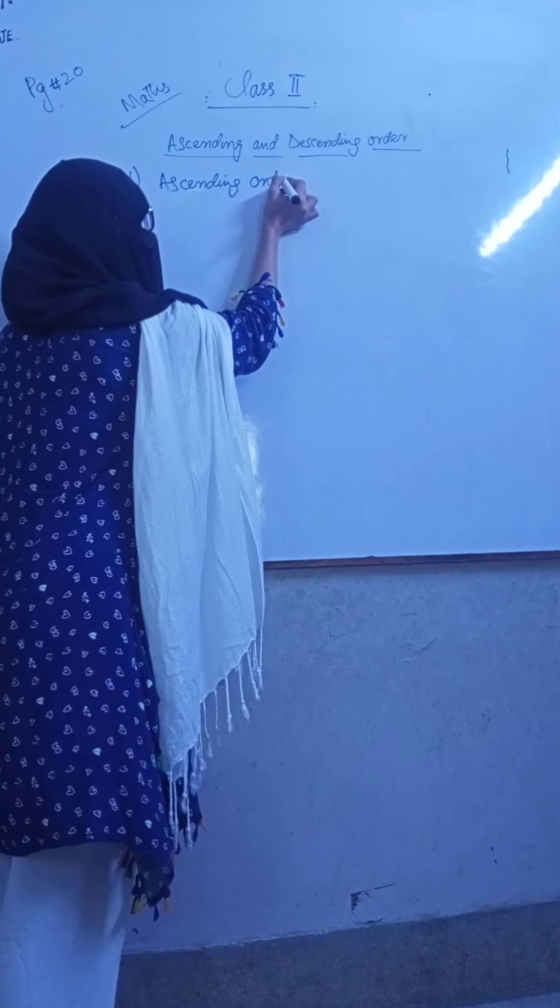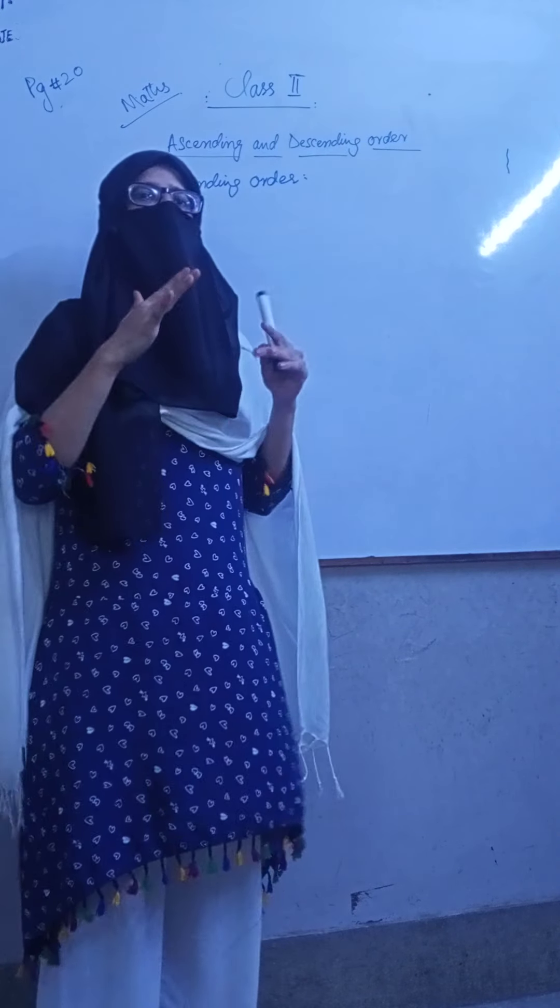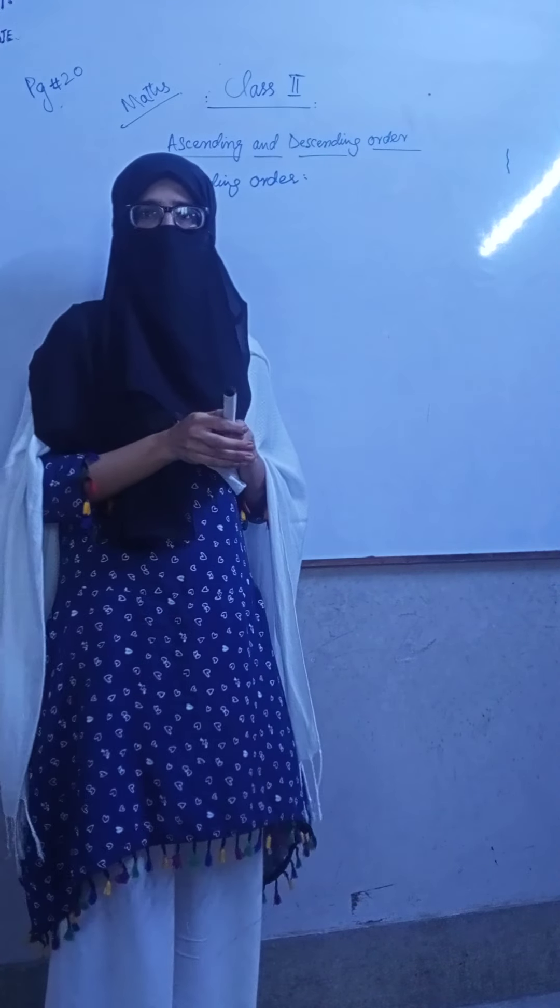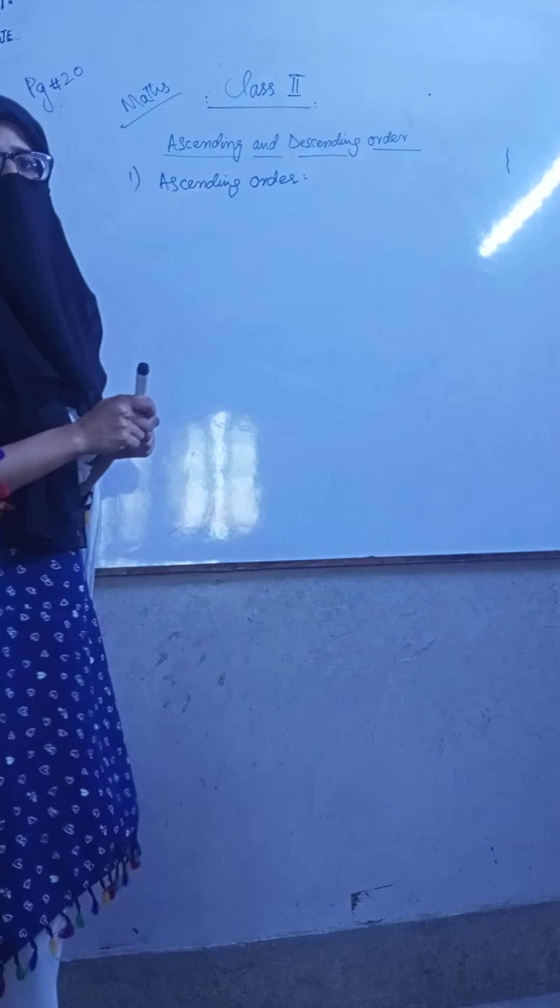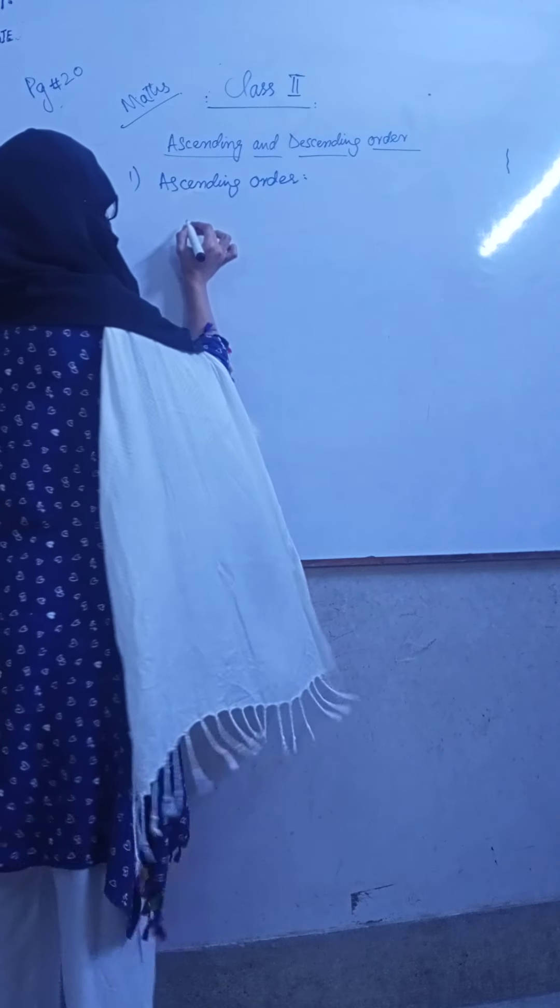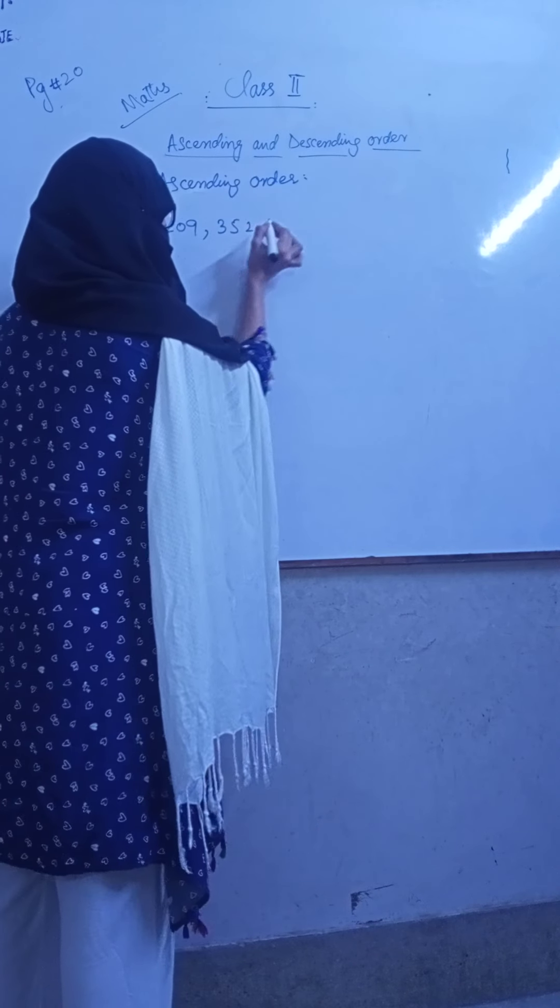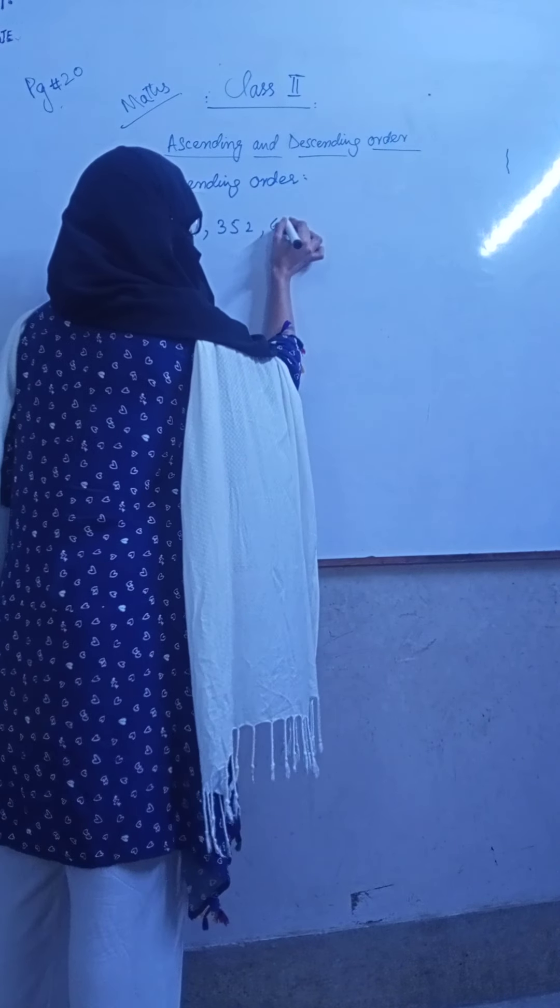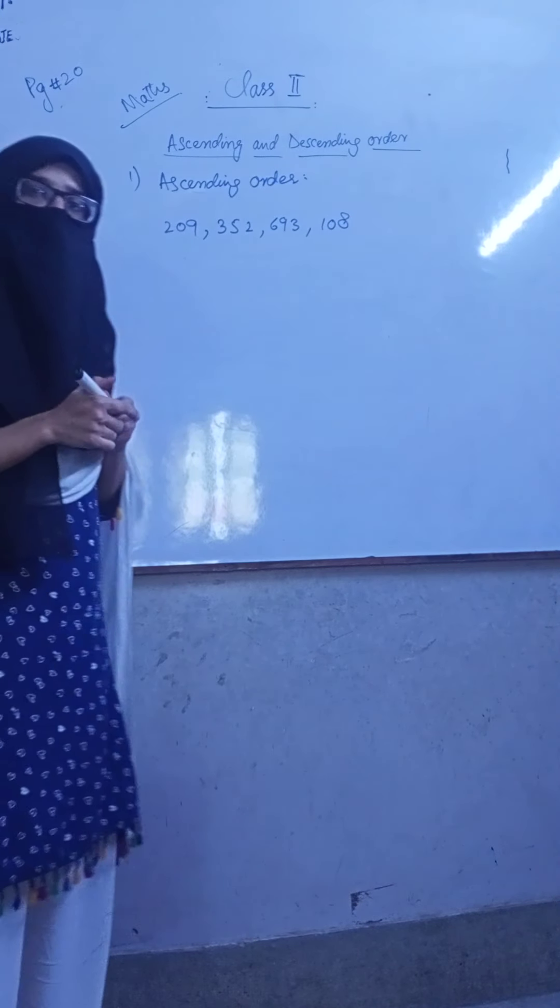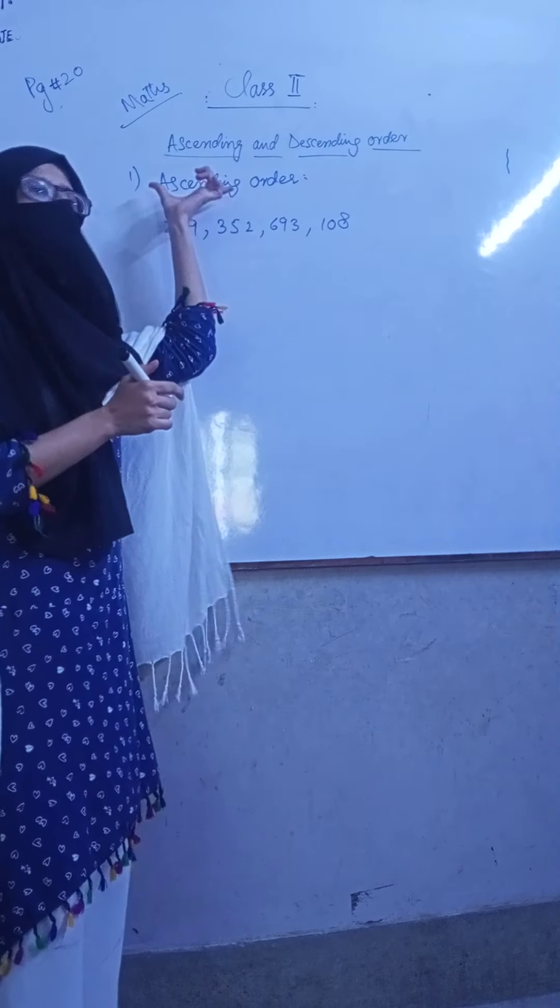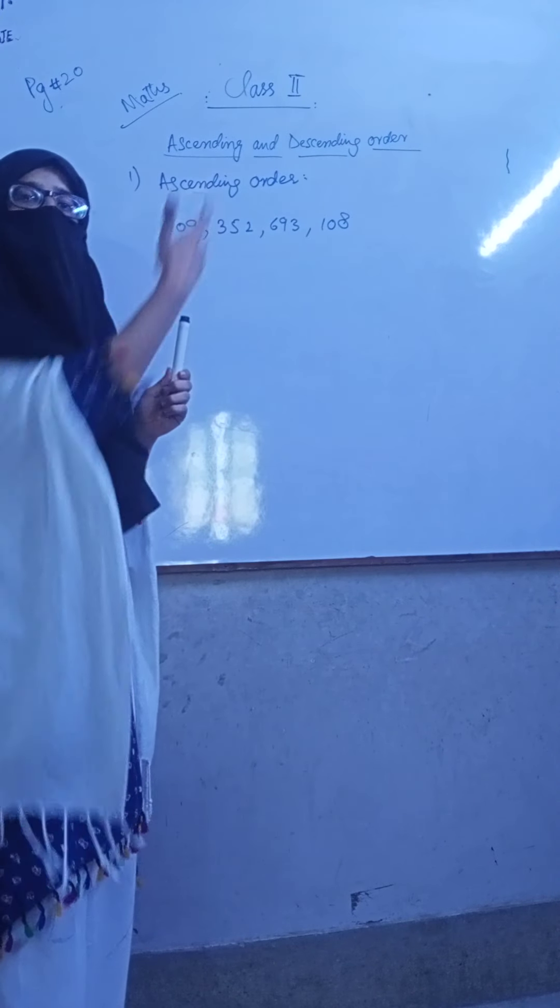What is Ascending Order? If we have a collection of numbers, how do we know Ascending Order? If we have numbers 209, 352, 693, 108. We have to arrange these numbers into Ascending Order. So Ascending Order means we are going first to increase the number.